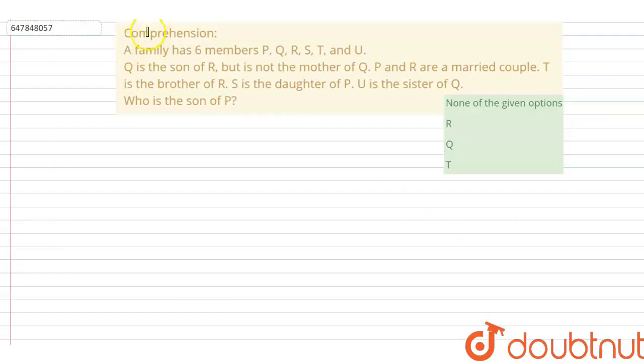Hello students, we have a question. We have kept a comprehension here. A family has 6 members: P, Q, R, S, T and U.